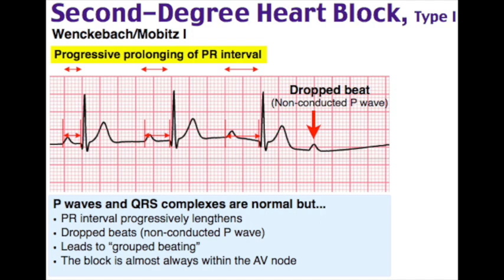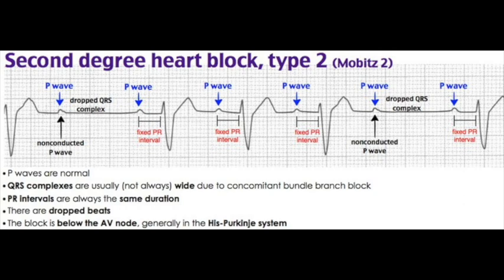Mobitz type 1 in depth: interruption at the AV node, commonly above the bundle of His. Often a normal variant with high vagal tone. Also caused by inferior wall MI, AV nodal ischemia, and AV nodal blocking drugs. Mostly asymptomatic; if symptomatic, bradycardia-related decreased perfusion. EKG diagnosis: progressively lengthening PR interval until an occasional non-conducting atrial impulse with a dropped QRS. Management: asymptomatic — observation; symptomatic — atropine first line, epinephrine, pacemaker if persistent.